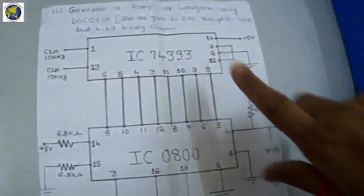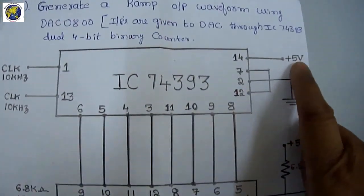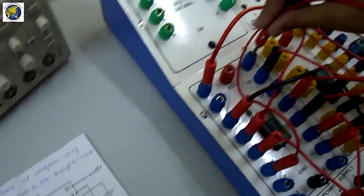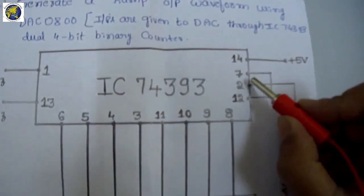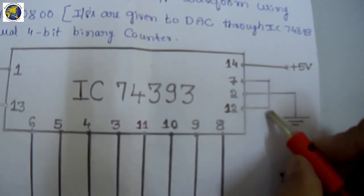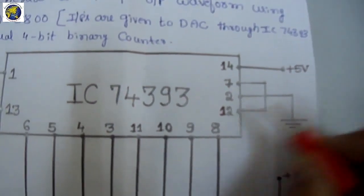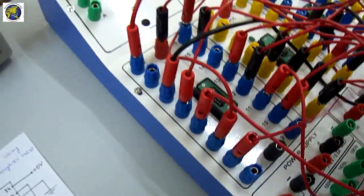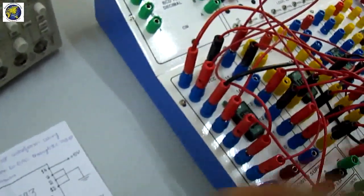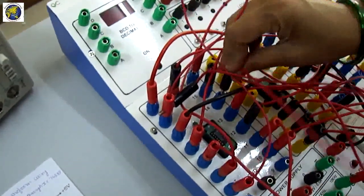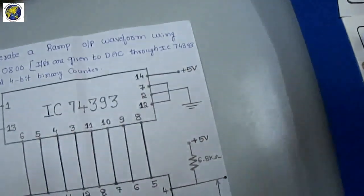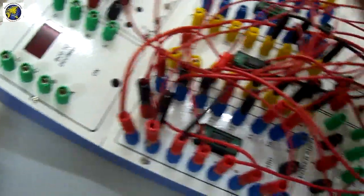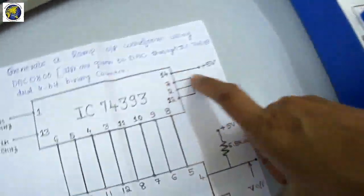Next, 74393 pin number 14 is connected to plus 5 volts VCC. Pin number 7 of 74393 is connected to pin number 2 of the CMIC. Pin number 2 is connected to pin number 12 of the CMIC, and pin number 12 is connected to ground.